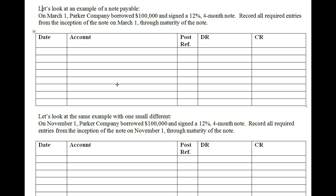However, they would use a year for current liabilities because the year is longer than their operating cycle. But let's look at a ship manufacturer. If you build a Royal Caribbean cruise liner, that ship is not going to be produced in a matter of days — it takes a couple of years to completely build from the ground up. So their operating cycle could potentially be two or three years, and a current asset for a cruise liner manufacturer could be longer than a year on their books.